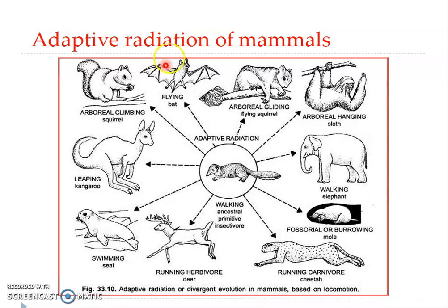From a primitive ancestral insectivore — a short-legged, insect-eating, rat-like terrestrial creature that walked with the soles of its feet flat on the ground — they evolved to all the present-day types of mammals. In respect to limb structure among eutherian or placental mammals, adaptive radiation occurred in five different lines.